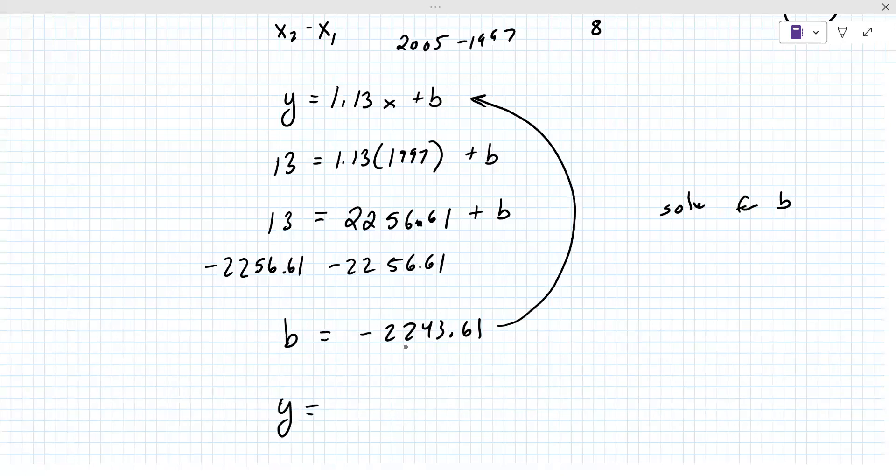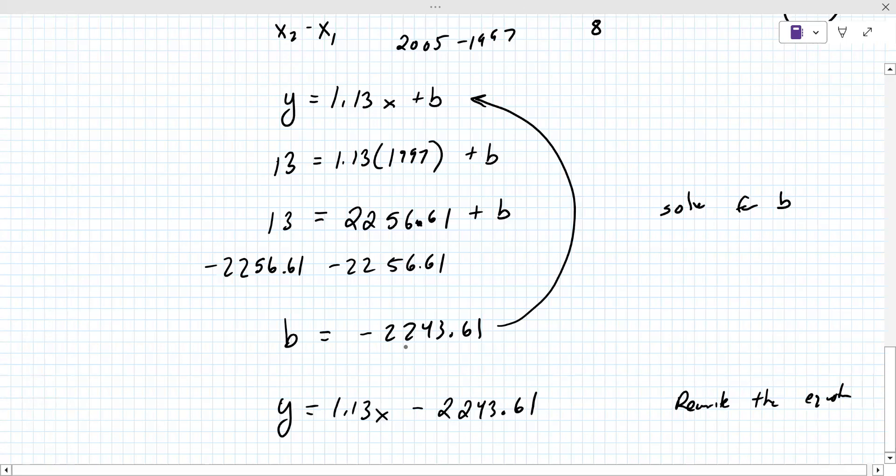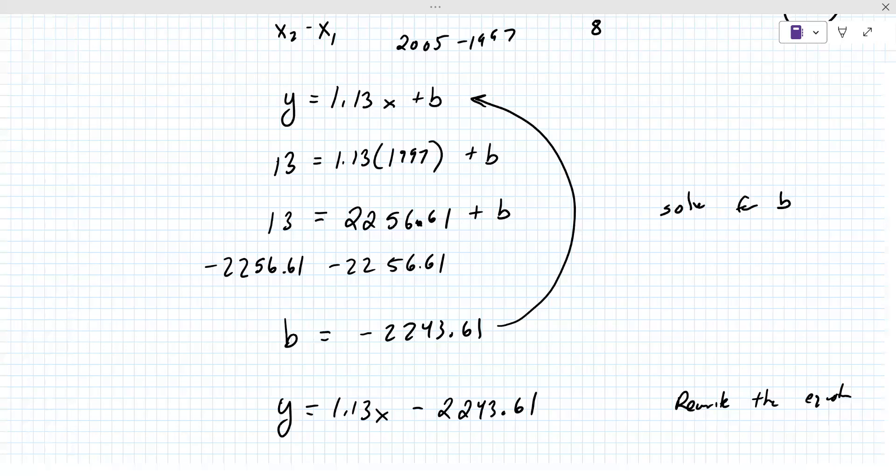The Desmos scientific, they have an app and it's available on your phone. So you may consider that. So that B value goes back into the equation. So you have to rewrite the equation with that B value in it. So it's Y equals 1.13 X minus, can I have to calculate this? No. You're just rewriting the equation. Y equals 1.13 X minus 2243.61. And how am I supposed to rewrite that? No, that is it. That's the answer. There's nothing more to do. Any questions on that? Not really.